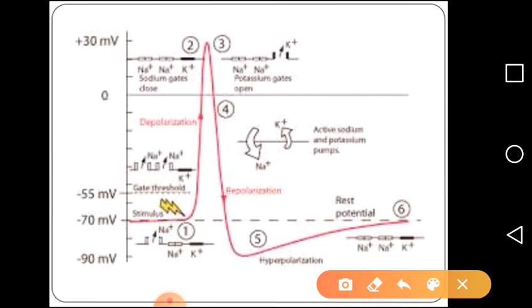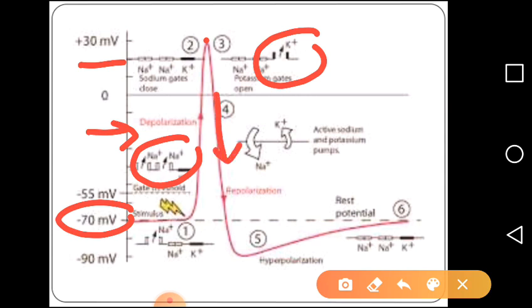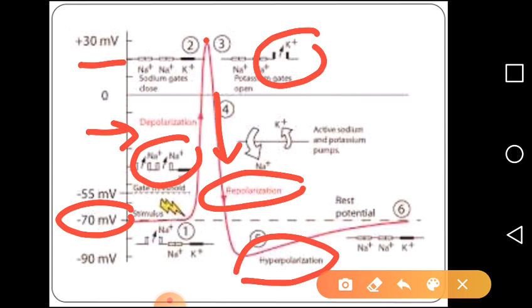Starting at a voltage of minus 70 millivolts, sodium channels open, leading to depolarization. The voltage may reach plus 30 or plus 40 millivolts. Then the sodium voltage-gated channel closes and potassium channels open. When potassium channels open, more potassium moves outside, the inside of the cell becomes more negatively charged, causing a reduction in voltage — this leads to repolarization. Sometimes the inside becomes even more negatively charged, leading to hyperpolarization, where the voltage may reach minus 90 millivolts.